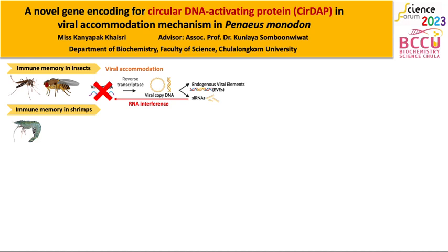And how about in shrimp? We hypothesized that shrimp would have the viral accommodation mechanism because the shrimp genome containing the viral sequence of IHNV has been found. Interestingly, this shrimp can tolerate the infection.